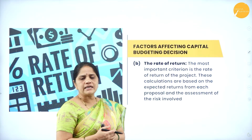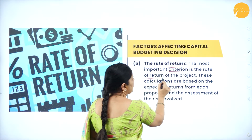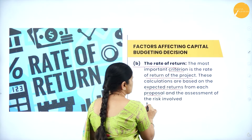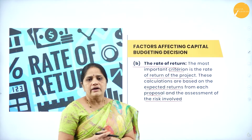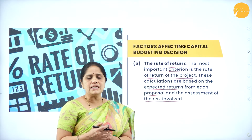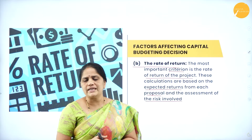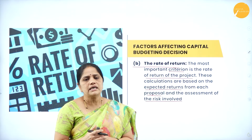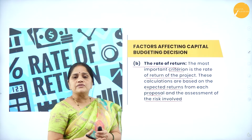The second factor affecting the capital budgeting decision is the rate of return. The most important criterion is the rate of return of the project. These calculations are based on the expected returns from each proposal and the assessment of risk involved. If the rate of return of Company A is around 15% and Company B is around 20%, then the company should opt for Company B because the rate of return is higher. The higher the rate of return, the more attractive it will be for the company.